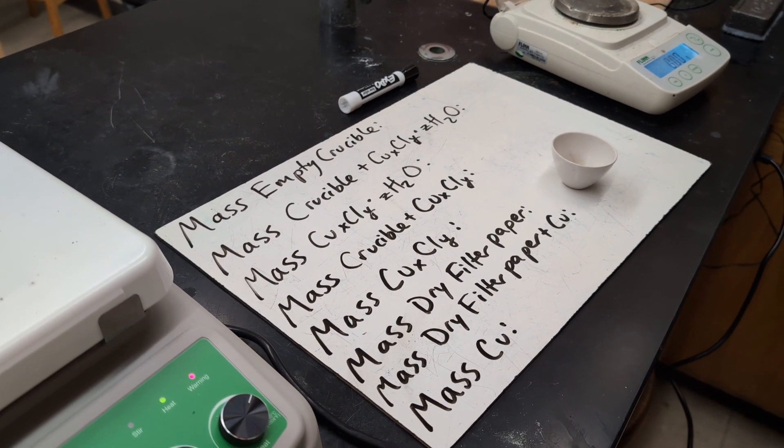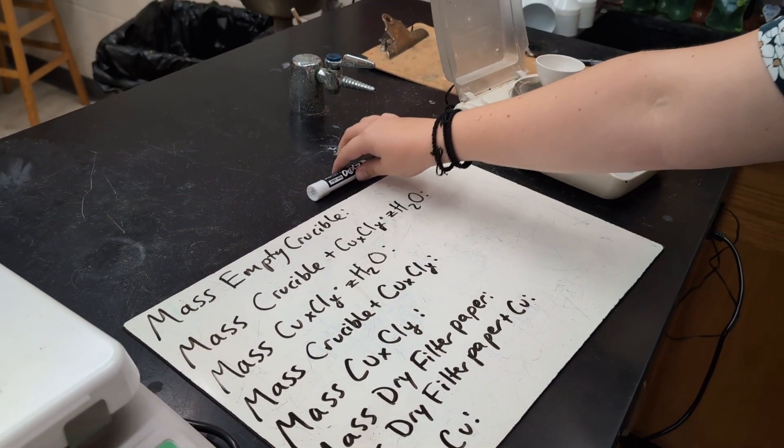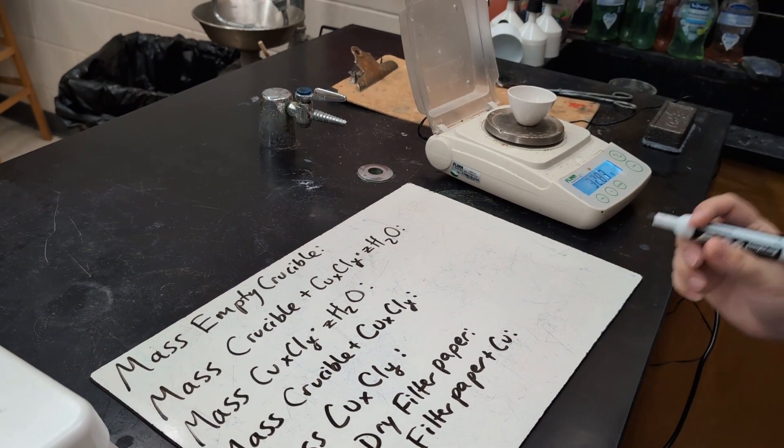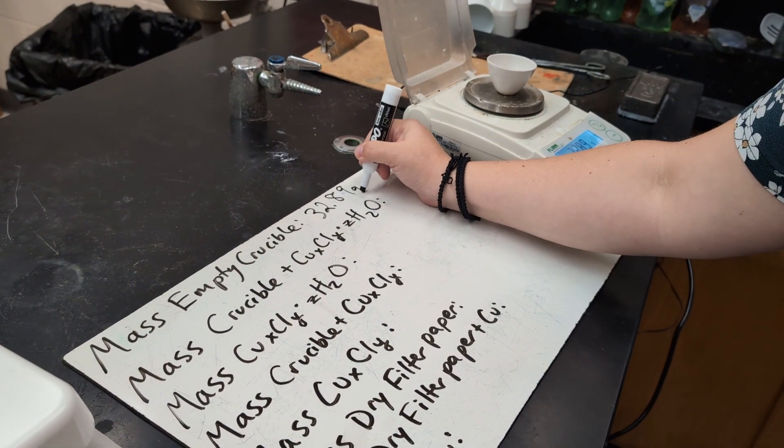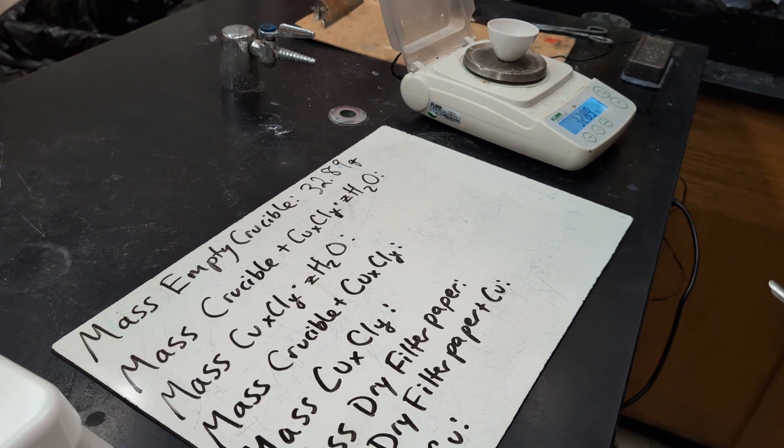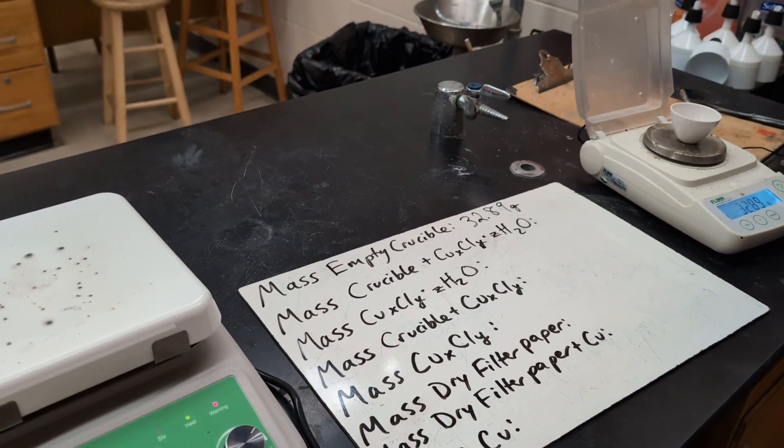So the first thing we want to do is find the mass of our empty crucible. And I got 32.89 grams. Now you can use an analytical balance for slightly more precise measurements, but I found the hundredths place is usually pretty good.